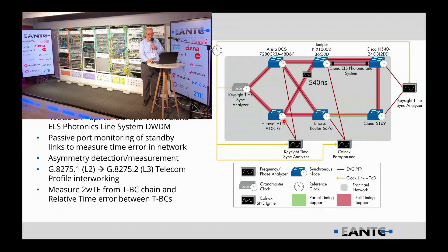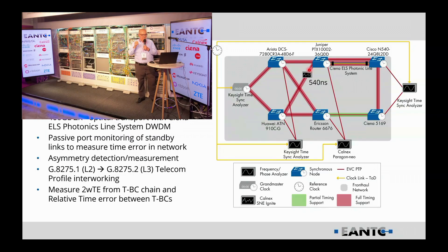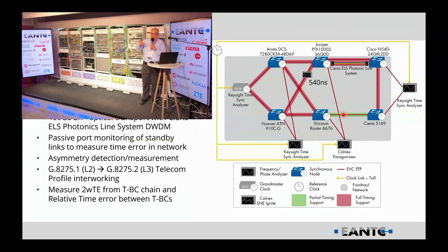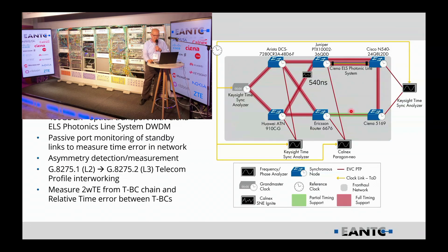All these links are generally 100 Gig links. The only difference is between the Huawei and the Juniper, where we have a 10 Gig link and we've put 540 nanoseconds of impairment on that link, introducing asymmetry in one direction which will naturally introduce a timing error — and we can see the results of that. This is all running the G.8275.1 profile, except for the link between Ericsson and Ciena which is running G.8275.2, the PTP over IP profile. The Ericsson is doing an interworking function turning G.8275.1 into G.8275.2, and there is no SyncE running across this link, so we'll see some natural variability in the clock.